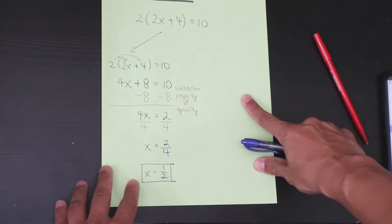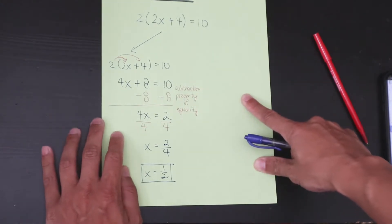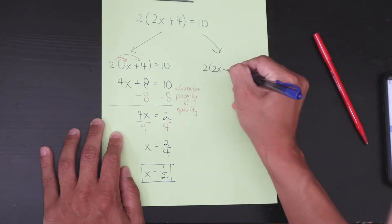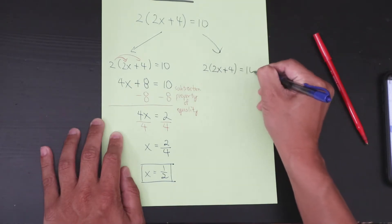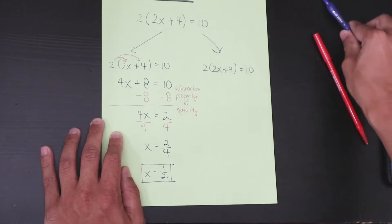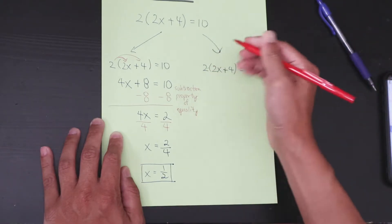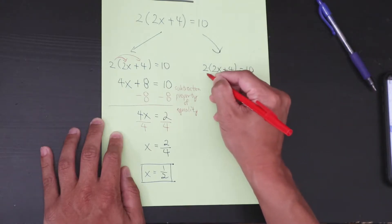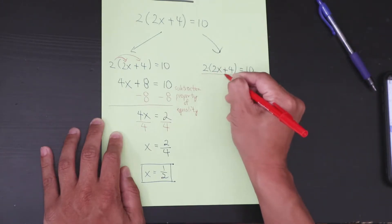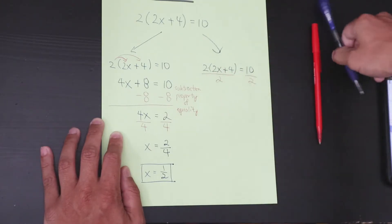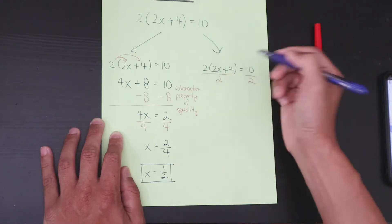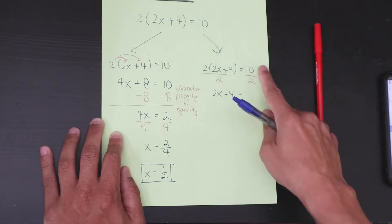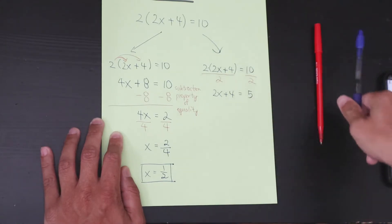That's method one. Method two: instead of distributing, since there's a multiplication between the 2 and the quantity, you divide the entire equation by 2. So 2 divided by 2 cancels, and you're left with 2x plus 4 equals 10 divided by 2, which is 5.